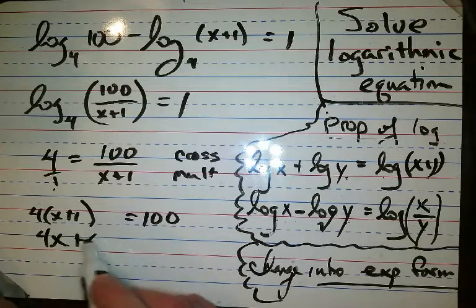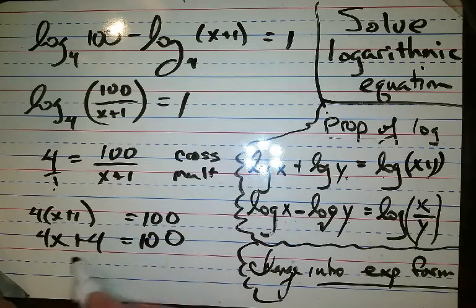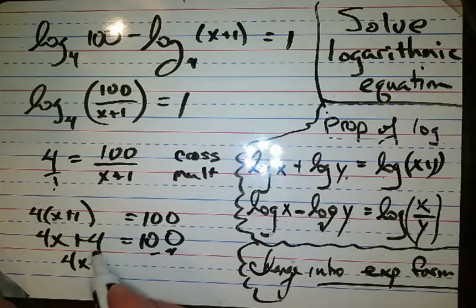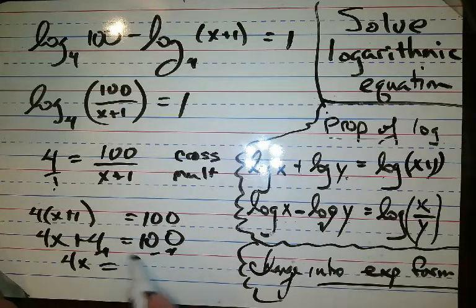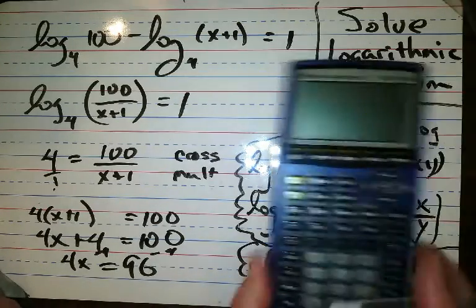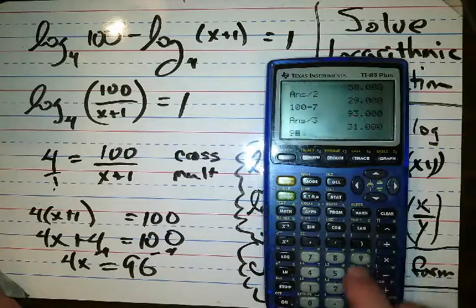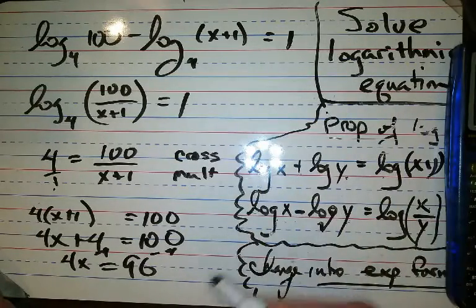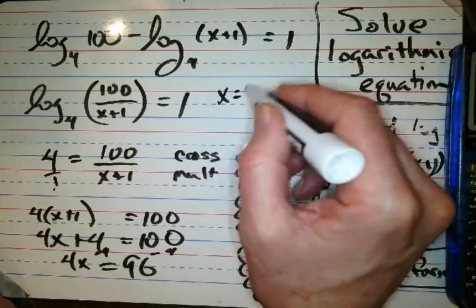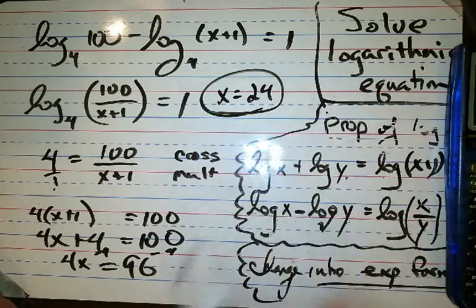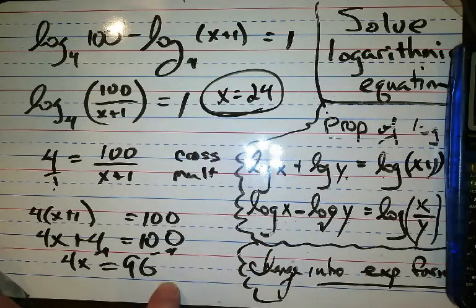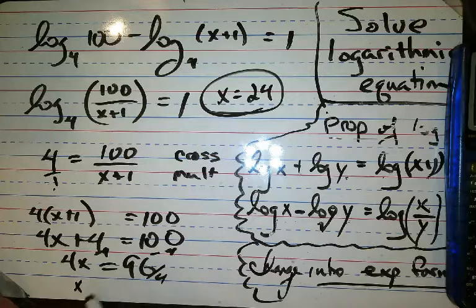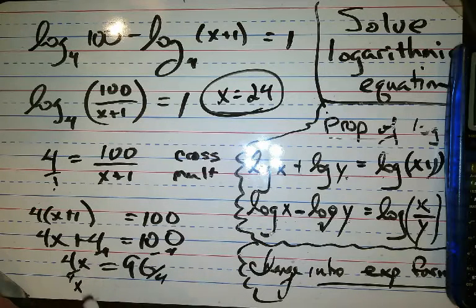4x plus 4 equals 100. Let me subtract. Subtract for 96. I don't know what that is. 96 divided by 4. Ah! 24. X is 24. X is 24. We just divided by... Why didn't I write it down here? I don't know. Divide by 4. Divide by 4. X is 24. Done.